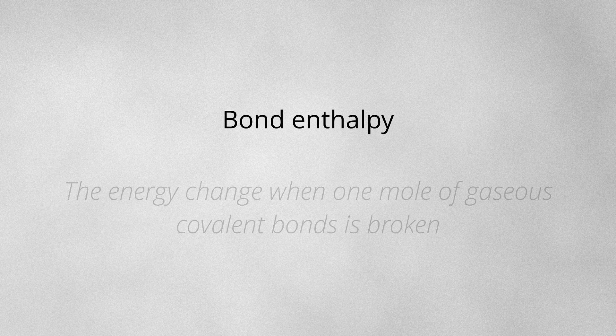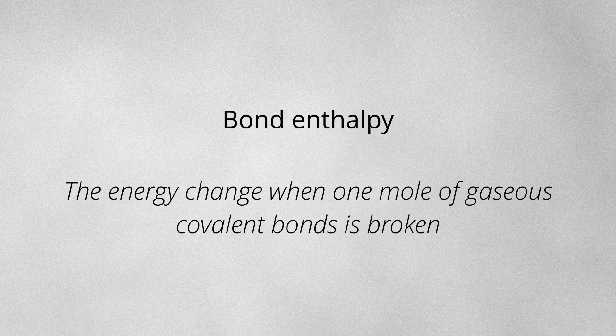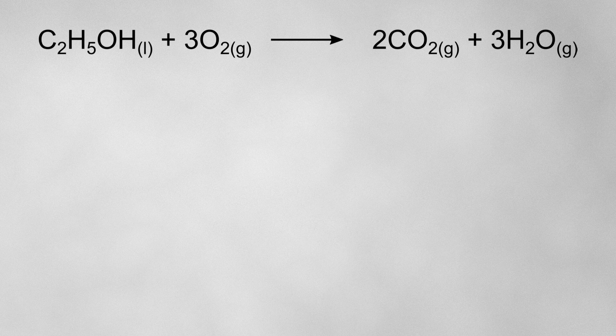The final example I'm going to show you is a Hess cycle that uses bond enthalpies. The definition of the bond enthalpy is the energy change when one mole of gaseous covalent bonds is broken. Let's take a look at this reaction showing the complete combustion of ethanol.